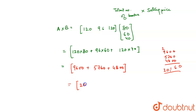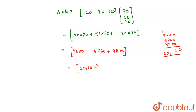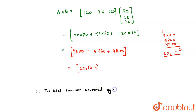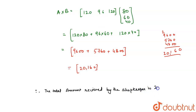So this matrix gives us 20,160. Therefore, the total amount received by the shopkeeper is rupees 20,160. I hope you understood the explanation. Thank you.